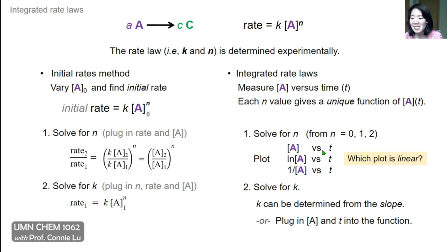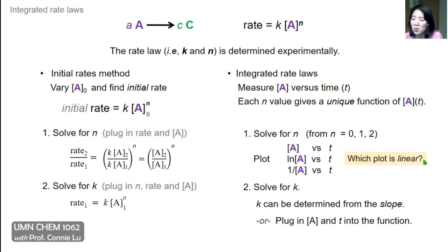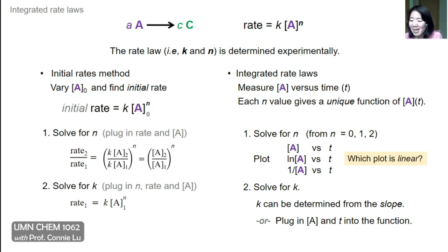For zeroth order it's A versus time. For first order it's the natural log of A versus time. And for second order it's one over A versus time. If you have data of A versus time, you can also plot the natural log and one over A, and only one of these plots will be linear. Depending on which one is linear, you can identify the value of n. Once you have n, you can solve for k from the slope of these plots or by plugging A and time into the function.